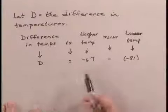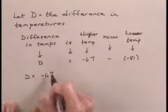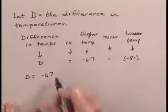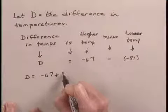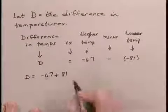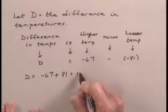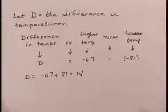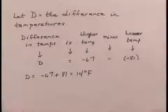So now we have this equation to solve. D is equal to negative 67. And when I subtract negative 81, I can think of that as adding the opposite of negative 81 or adding 81. And negative 67 plus 81 is equal to 14. So we would say that the average high temperature is 14 degrees Fahrenheit higher than the average low temperature.